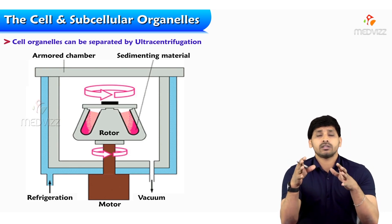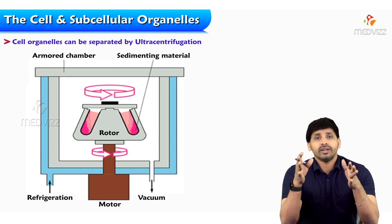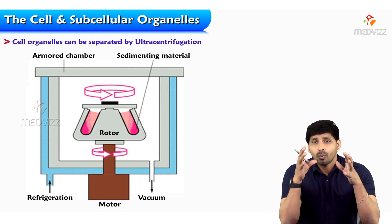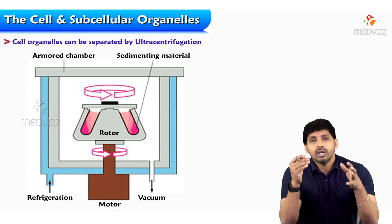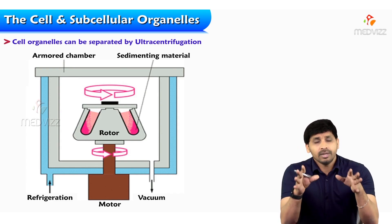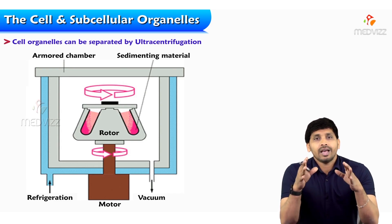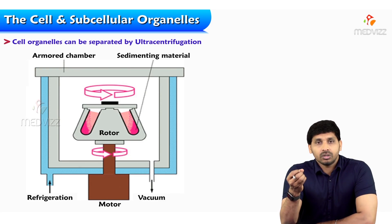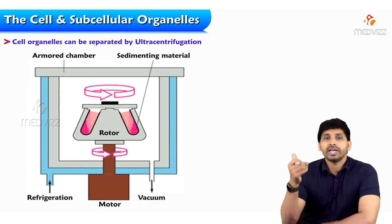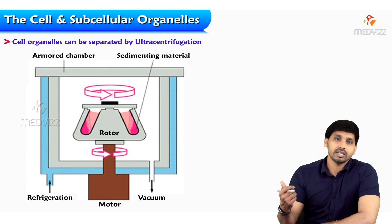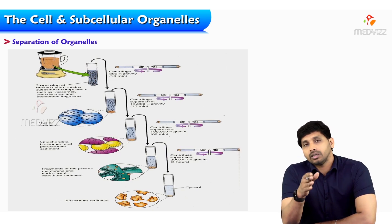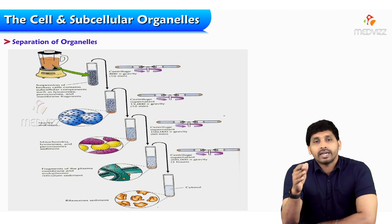To give an example: suppose in a bucket of water, you take different weights of glasses and drop them in and rotate the water — the most weighted one will sink first. Similarly, subcellular organelles in eukaryotic cells have different molecular weights, so when you apply centrifugal force, the heaviest will sediment first and the lighter ones later. This is how we can segregate or isolate subcellular organelles.